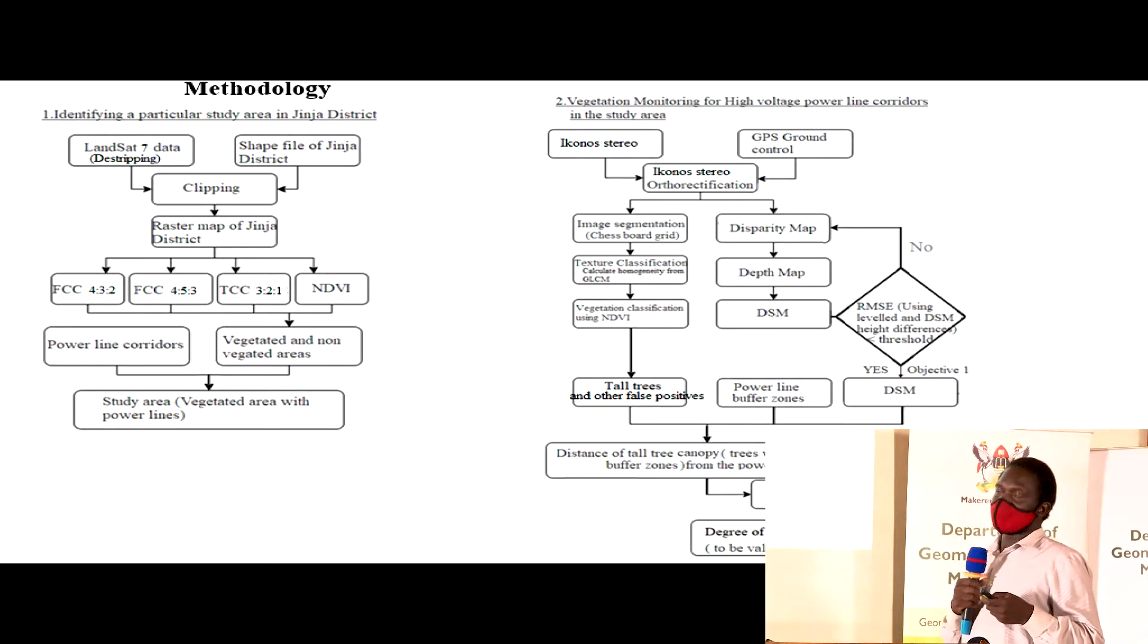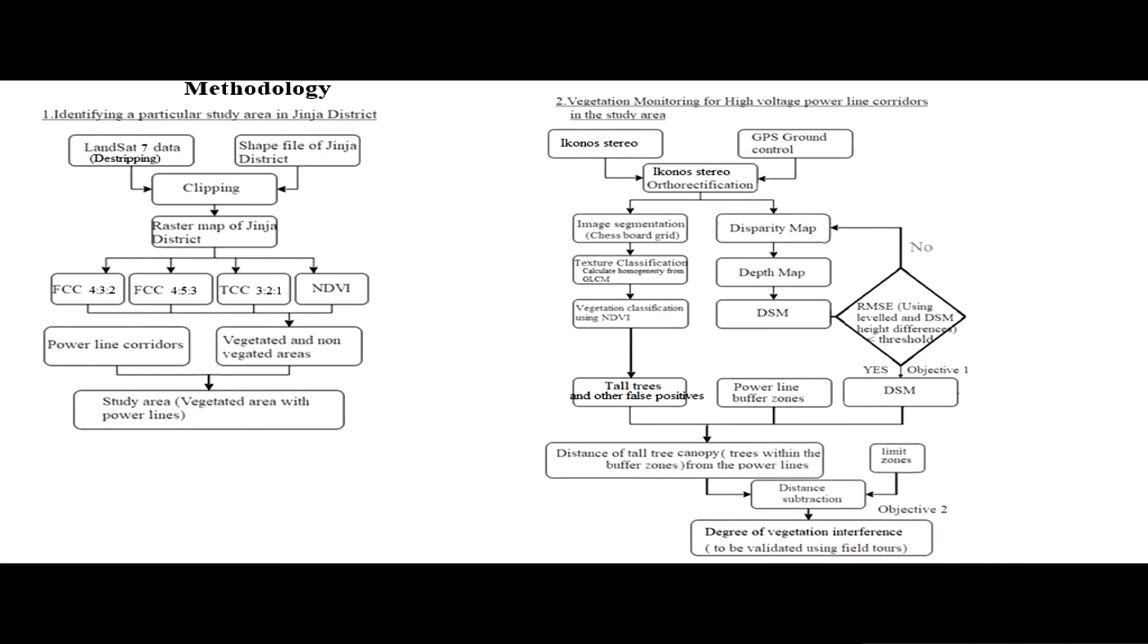In my methodology, I used Landsat 7 data. First, if I'm to get a stereo image for the whole Jinja district, it would be expensive for me as an individual researcher. So I'm trying to determine a specific place in Jinja where I'm going to carry out this study. That is the first part of the methodology.